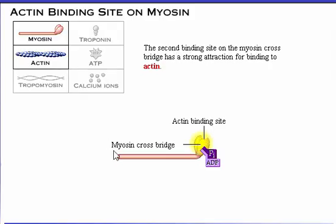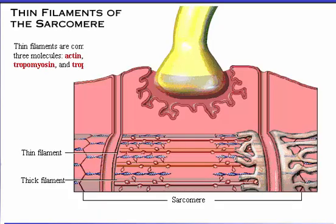Now that we've examined the structure of thick filaments, let's look more closely at thin filaments. Thin filaments are composed of three molecules: actin, tropomyosin, and troponin. Click a thin filament to examine the arrangement of these three molecules.